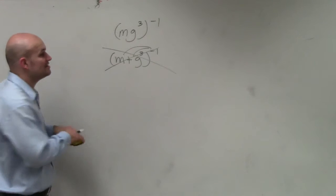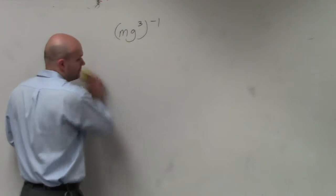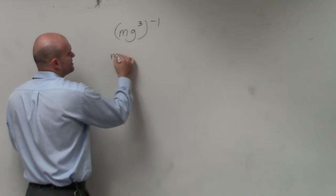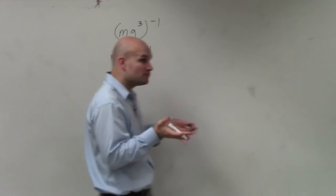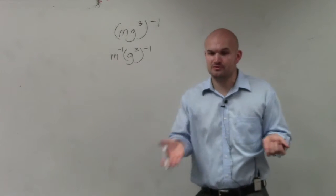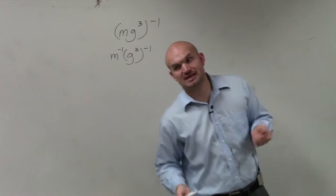However, since these are separated by multiplication, I can now rewrite this as m to the negative 1st times g cubed to the negative 1st. So you raise both of them. That's called the power to product rule, and it's actually in one of your examples as well.